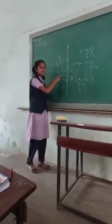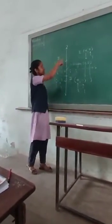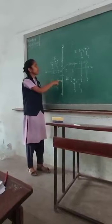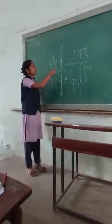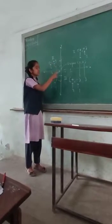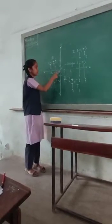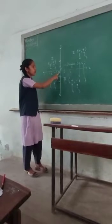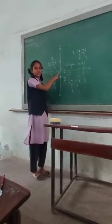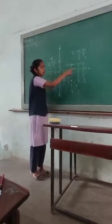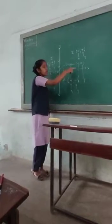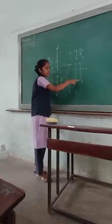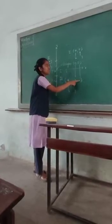The X axis and Y axis intersect at one point. That point is called the origin, and the coordinate of the origin is (0, 0). The X coordinate is 0 and the Y coordinate is 0.